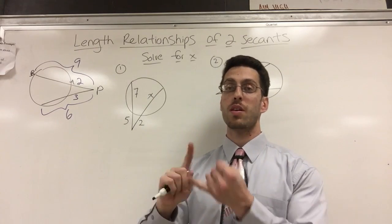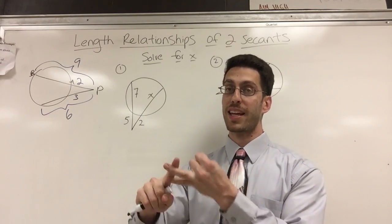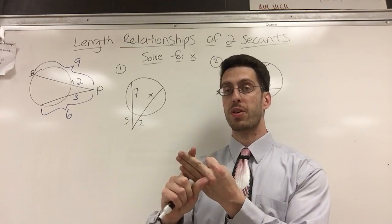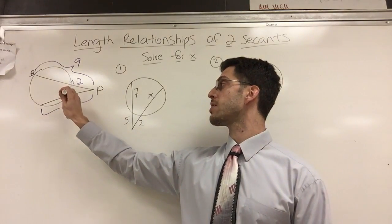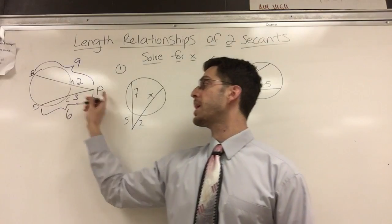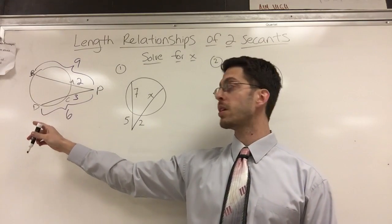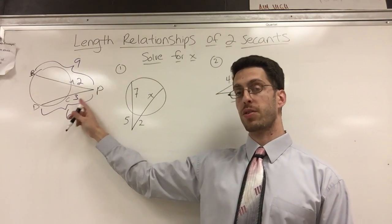So some vocabulary you should know is what a secant is, what a secant segment is, and what an exterior secant segment is. If you look at the bottom here, let's say this is C and D. PCD is another secant segment where PC is the external secant segment.